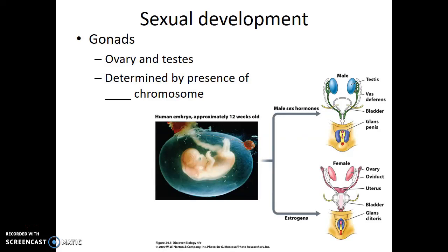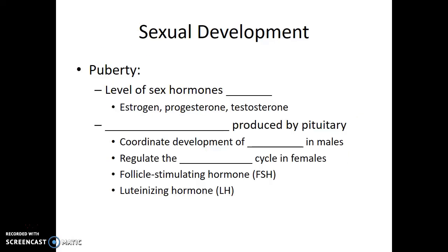Whether these structures develop into testes or ovaries during embryonic development is determined by the presence of a specific region of the Y chromosome known as the SRY region — the sex-determining region of the Y chromosome. The default developmental pathway is the female-specific pathway, but if the SRY region is present, then male-specific developmental pathways typically occur during embryonic development.